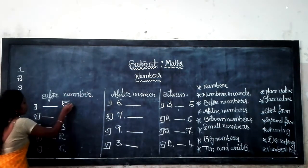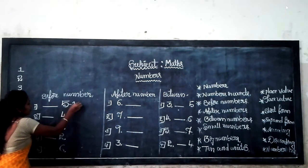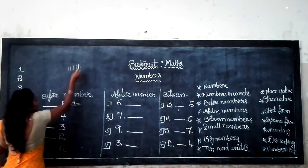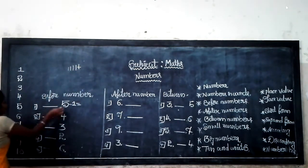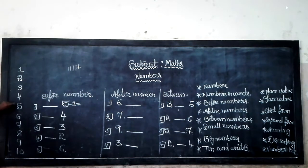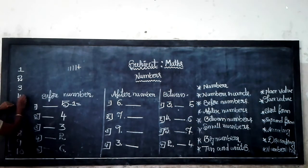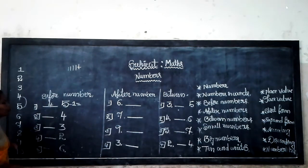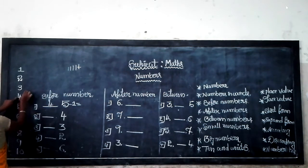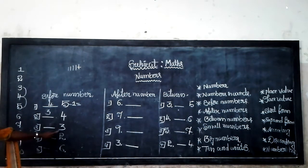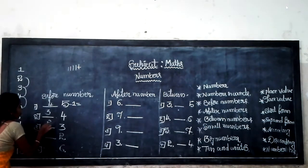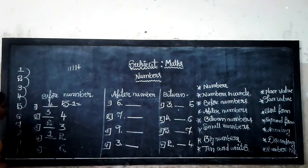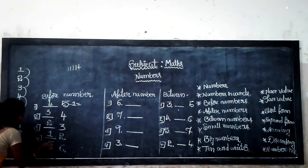Before number of 5: subtract 1. Look at 1, 2, 3, 4, 5 — subtract 1, so the answer is 4. The before number of 5 is 4. The before number of 4 is 3. The before number of 3 is 2. The before number of 2 is 1. The before number of 6 is 5.